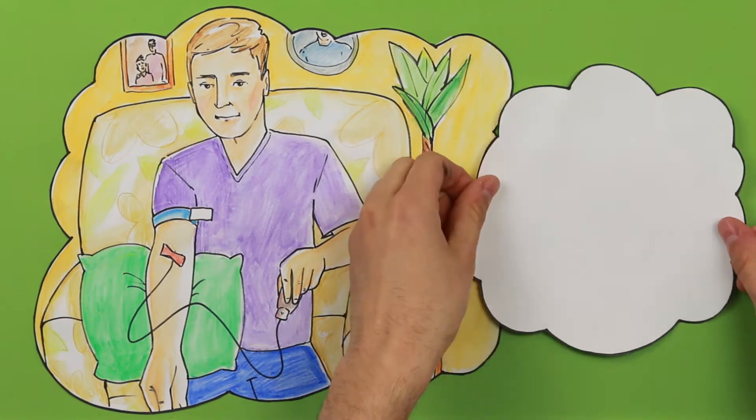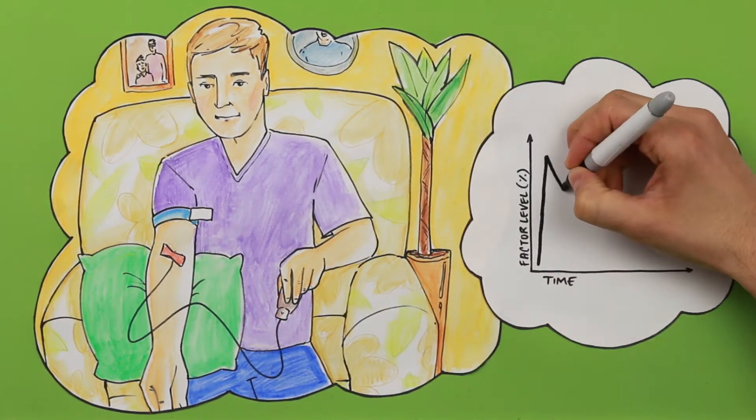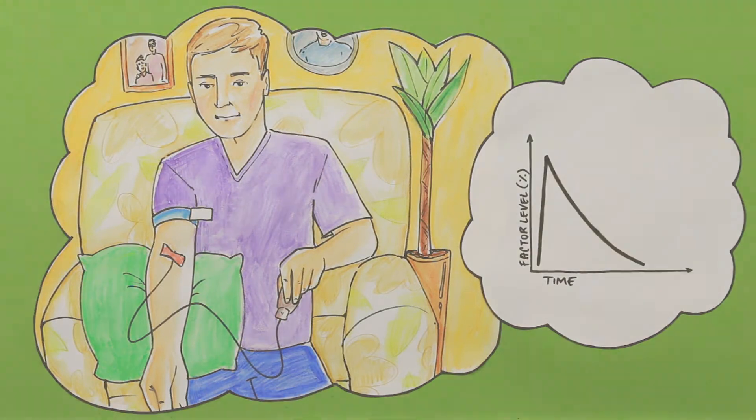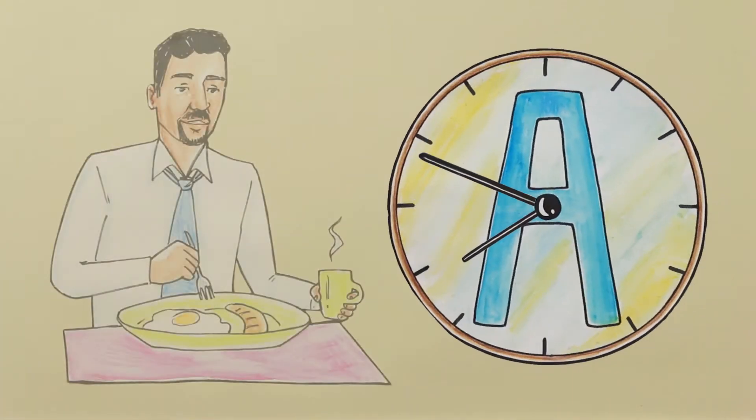Your factor level is at its highest shortly after taking a treatment, but this gradually decreases over time. The time it takes to fall by half is called the half-life.